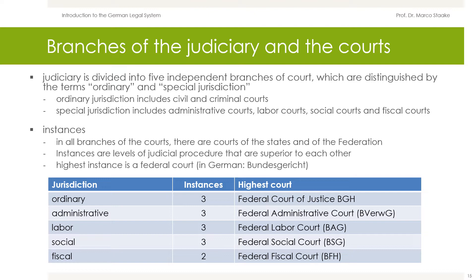In contrast, administrative and fiscal jurisdiction was exercised by civil servants bound by instructions. In all branches of the courts, there are courts of the federal states and of the federation itself. There are several instances within the individual branches of the courts. Instances are levels of judicial procedure that are superior to each other. As a rule of thumb, there are three instances: the first two are courts of the states, and the highest instance is mostly a federal court.